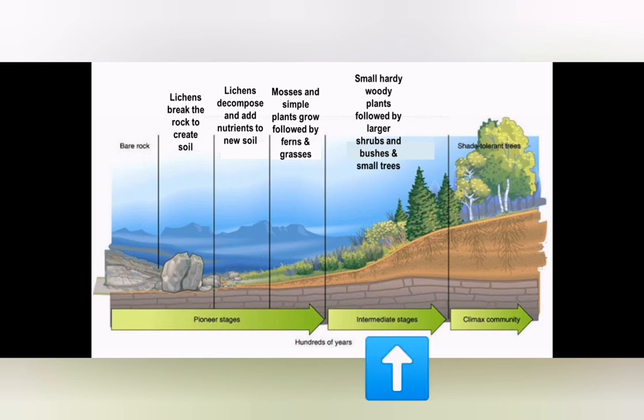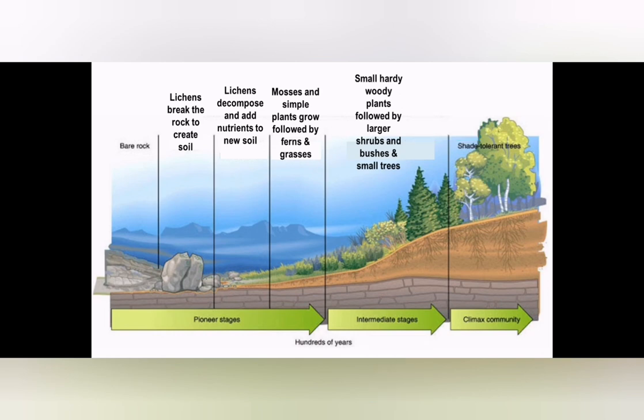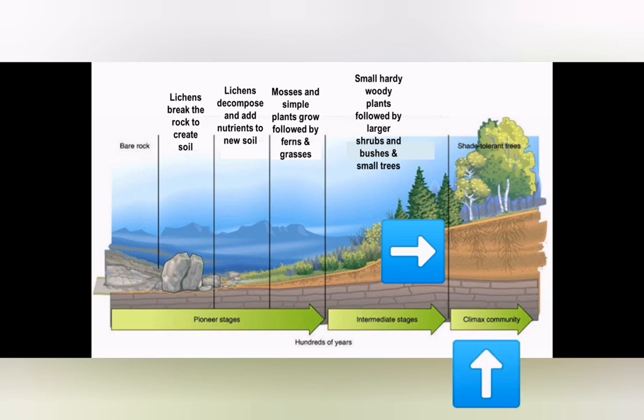That brings us to the second stage, which is the intermediate stage. Here we will see small hardy woody plants, followed by shrubs and perhaps very small trees starting to grow. As plant growth increases, there will be more soil as the roots break up more rock, and more nutrients going into the soil through decomposition of new plants.